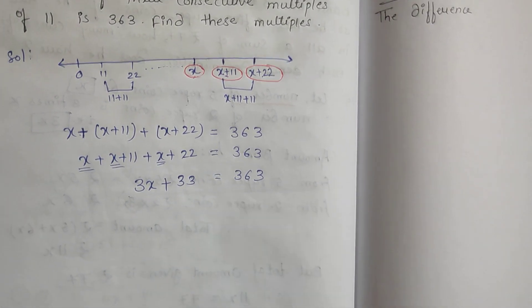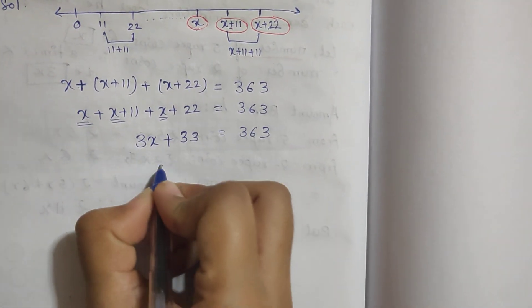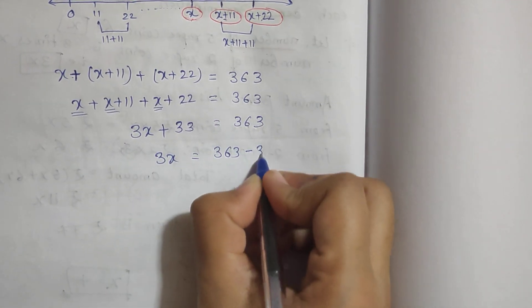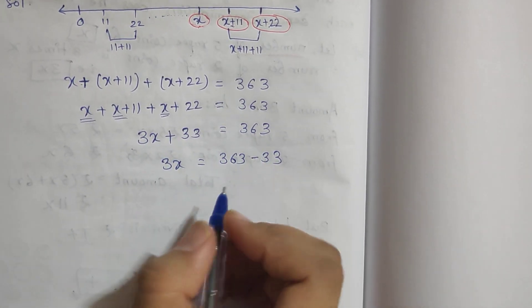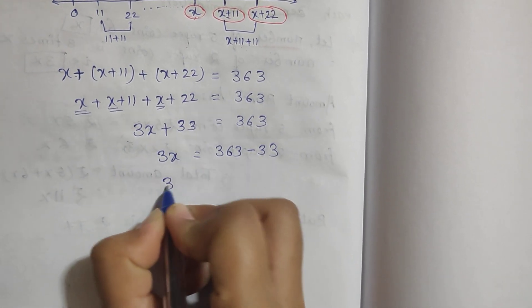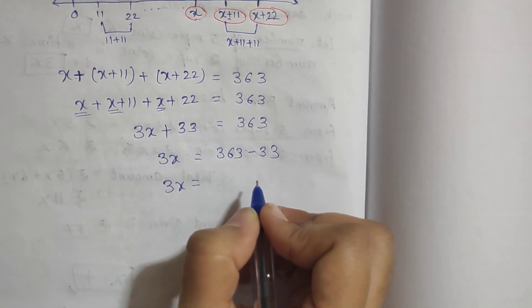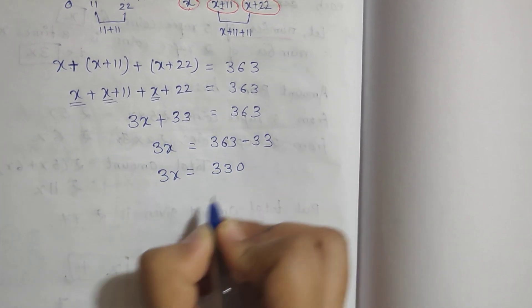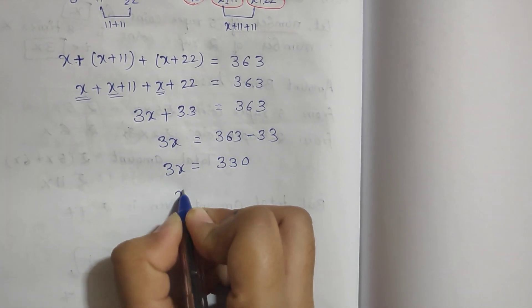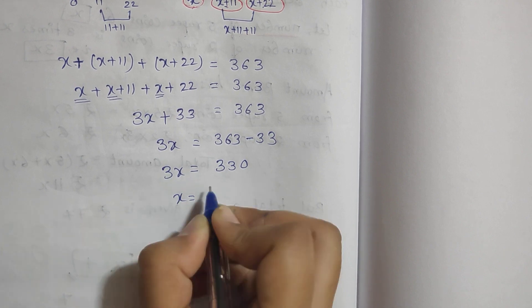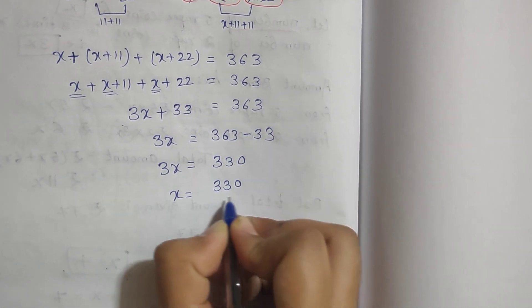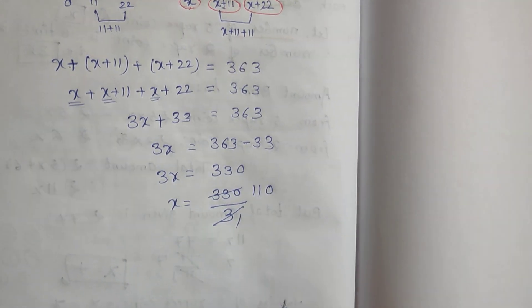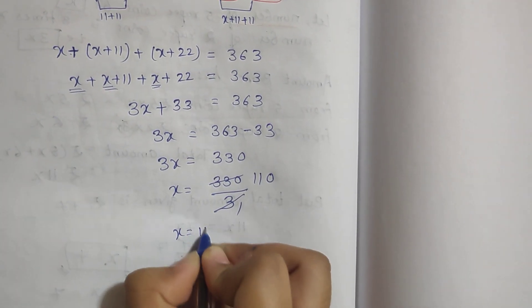Using the transposition method, 3x equals 363 minus 33, which is 330. Since 3 is multiplied on the left, it will divide on the right: x equals 330 divided by 3, so x equals 110.